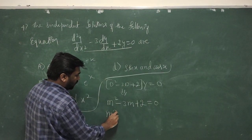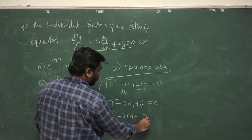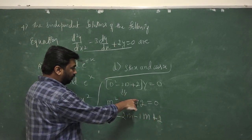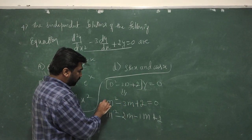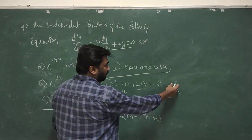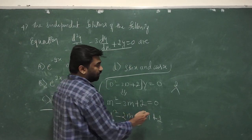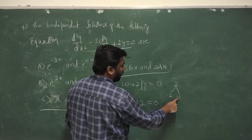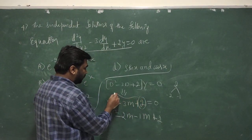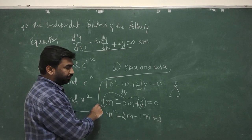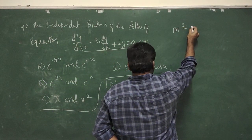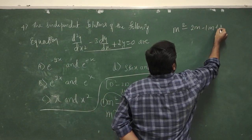Factorizing: m² minus 2m minus m plus 2 equals 0. We need two numbers that multiply to give plus 2 and add to give minus 3 — those are minus 2 and minus 1. So we write m² minus 2m minus m plus 2 equals 0, grouping as m(m minus 2) minus 1(m minus 2) equals 0.